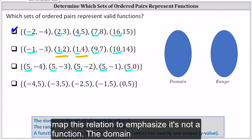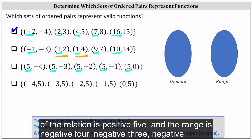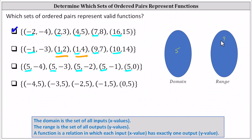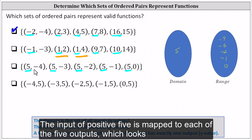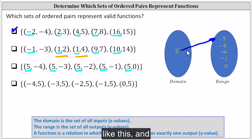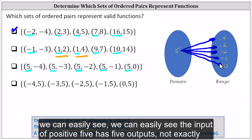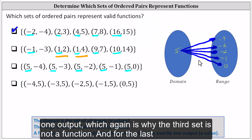Let's map this relation to emphasize it's not a function. The domain of the relation is positive five, and the range is negative four, negative three, negative two, negative one, and zero. The input of positive five is mapped to each of the five outputs. We can easily see the input of positive five has five outputs, not exactly one output, which is why the third set is not a function.